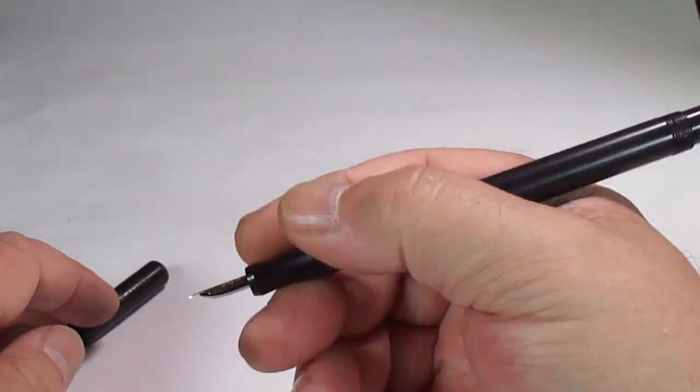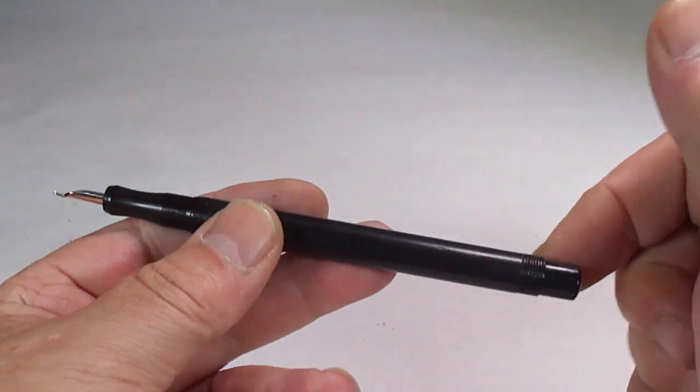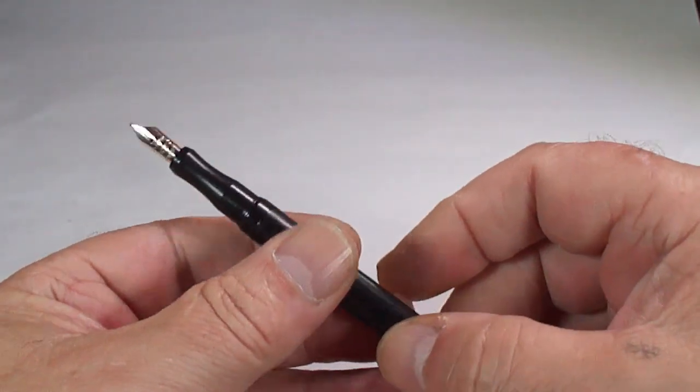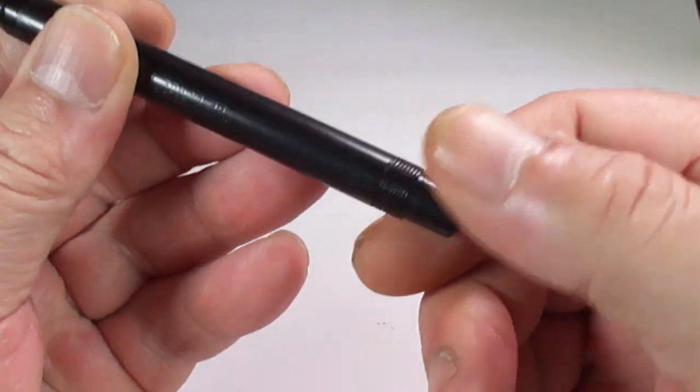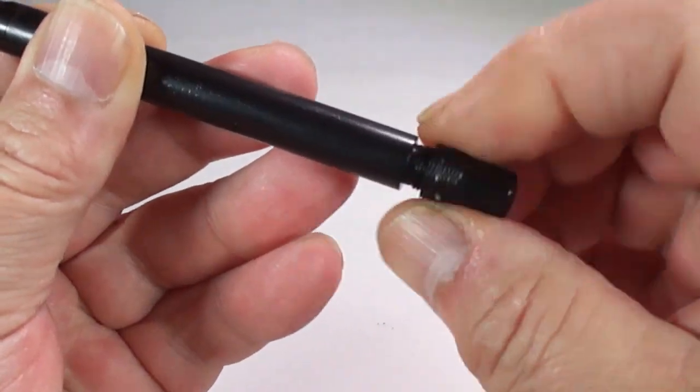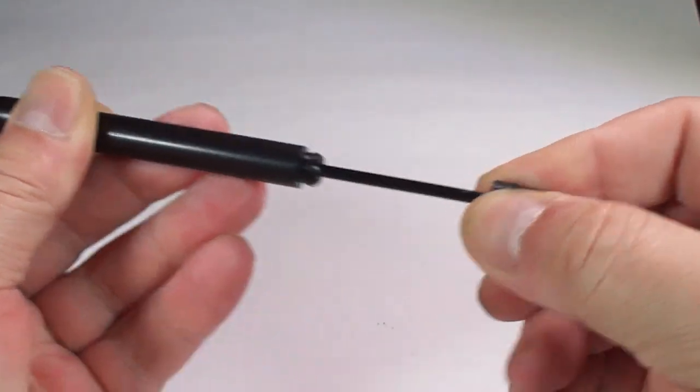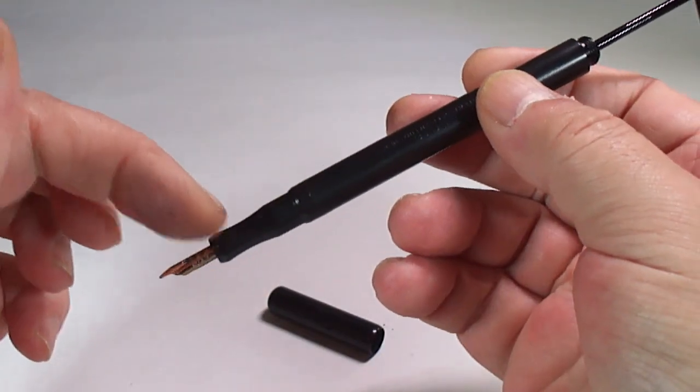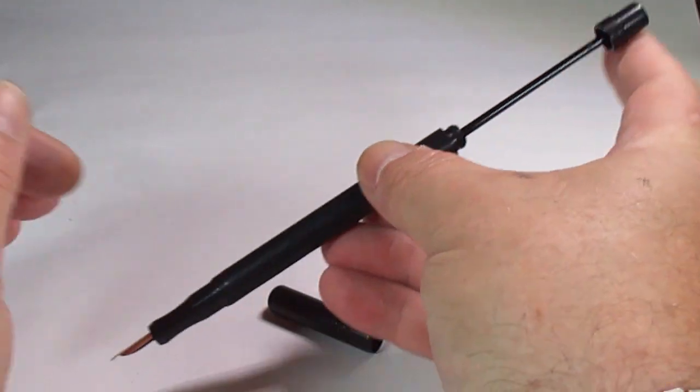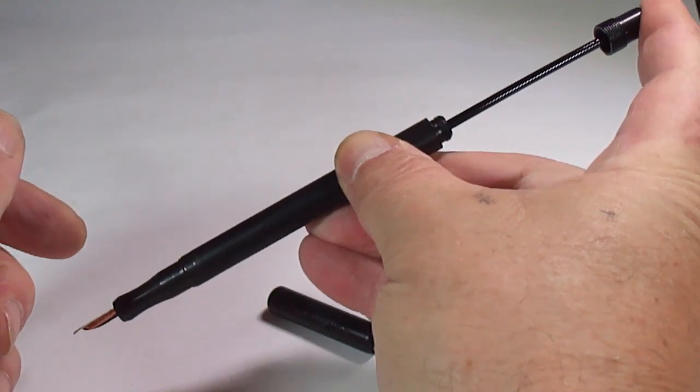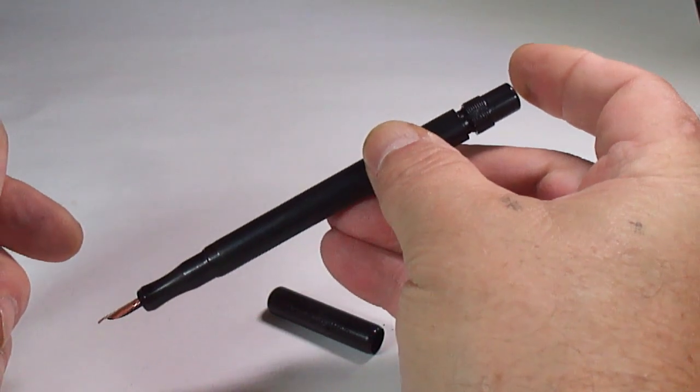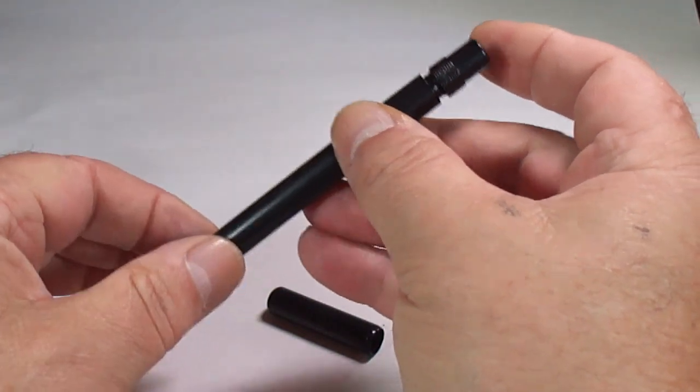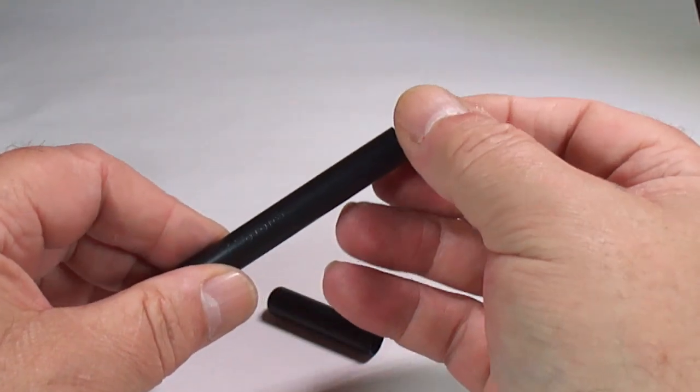It's a lovely comfortable pen to hold. It's what we term as a plunger filler. How do we fill the pen? Nice and simple. We simply unscrew the plunger like so, and we pull the plunger out like this. We dip the nib and a little bit of the section into the ink.